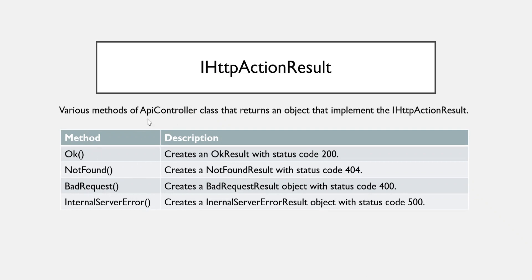There are ready-made methods available in the ApiController base class that return objects implementing IHttpActionResult. For example: Ok() creates an OkResult with status code 200; NotFound() creates a NotFoundResult with status code 404; BadRequest() creates a BadRequestResult with status code 400; and InternalServerError() creates an InternalServerErrorResult with status code 500. As we move ahead we will definitely use these methods and status codes. I hope you enjoyed this video — if you have any doubts you can write in the comment section. Thank you for watching.